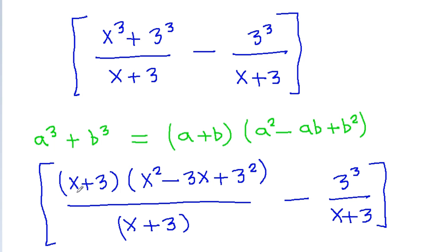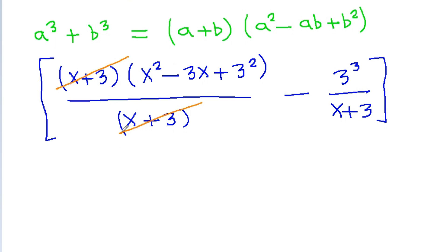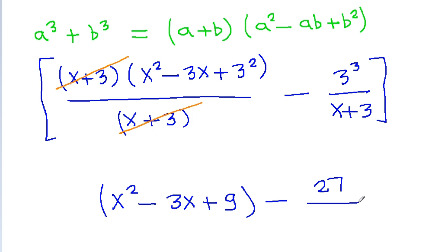Since x = 10³¹ and x + 3 = 10³¹ + 3, x + 3 is not equal to 0, so we can cancel (x + 3) and we get x² − 3x + 9 minus 27 / (x + 3).